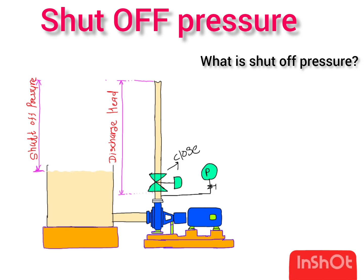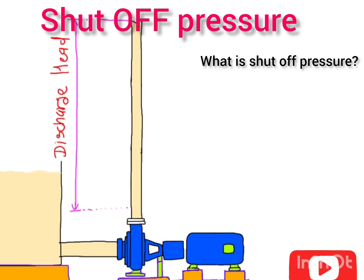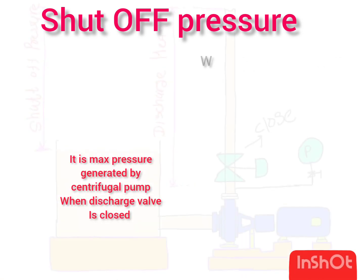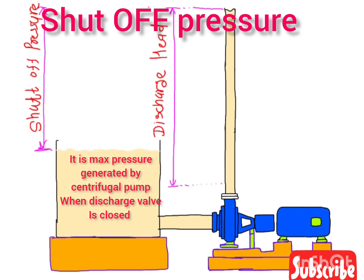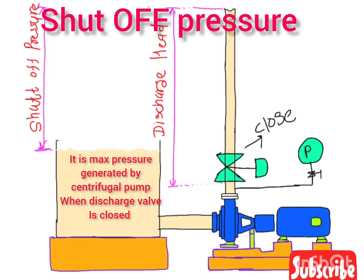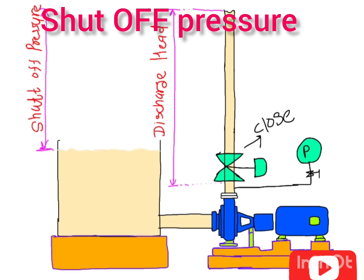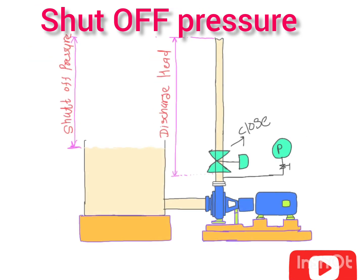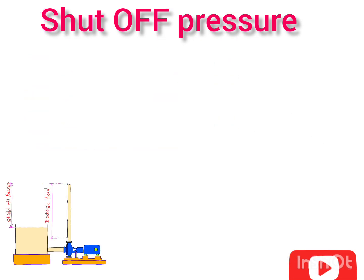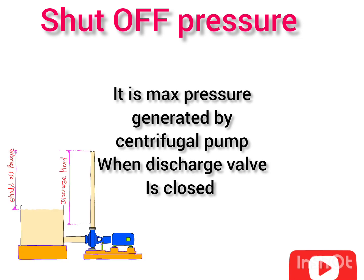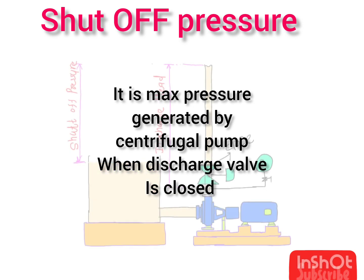So what is shut-off pressure in a centrifugal pump? The shut-off pressure is nothing but the maximum pressure that a centrifugal pump can generate when the discharge valve is closed. When the discharge valve is closed and there is no flow passing through the pump, the maximum pressure the pump can generate is called the shut-off pressure.